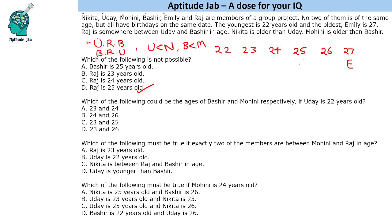Which of the following could be the ages of Bashir and Mohini respectively if Udaya is 22 years old? So Udaya is the youngest at 22. Raj has to be greater than 22. Mohini is older than Bashir, and Raj is between Udaya and Bashir, so Bashir must be greater than Raj. Therefore Bashir's minimum age is 24 — it cannot be less than 24. We can eliminate three options and the answer is option B. That was a simple question.